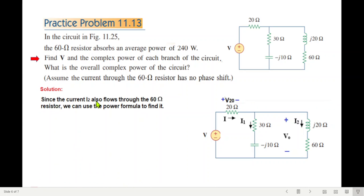The total voltage, V0 is the voltage across 20 ohm, V20. Since the current I2 also flows through the 60 ohm resistor, this current flowing through 60 ohm we can use the power formula to find it. Power formula, P equals I squared R, so I squared equals P over R. P is 240, R is 60, so I is 2. I squared is 4, so I2 is 2 amperes. Assume the current through 60 ohm resistor has no phase shift.